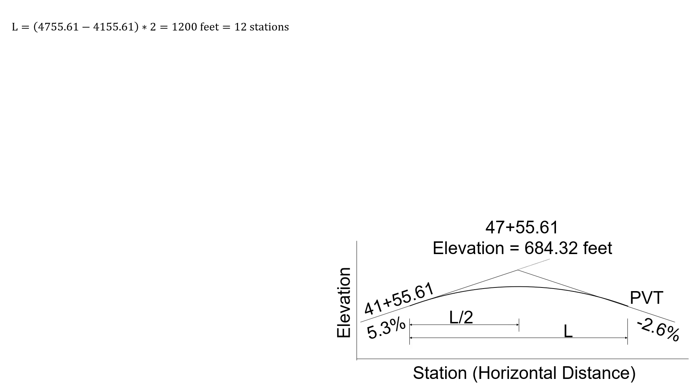So now we need to start solving. One of the things we're going to need to know is the length. Because we were given the PVC station and the PVI station, we can take that distance and multiply by two. That's going to give us a length of curve overall of 1,200 feet or 12 stations. Again, the 12 stations is what we'll want to use for our parabolic equation.